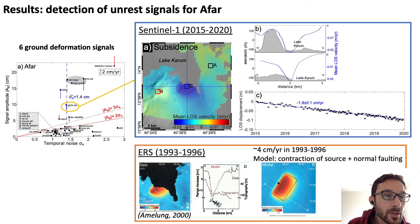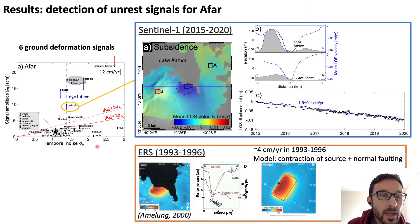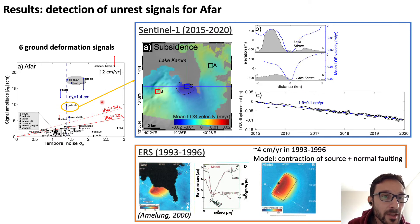Here I show the results of our detection. I plot the signal amplitude located around the volcanic center as a function of the temporal noise, which is the standard deviation of the time series outside the volcanic centers. There is a low amplitude-over-noise ratio for a large number of volcanoes below three sigma, and the high values are only selected for six volcanic centers that are related to ground deformation signals.